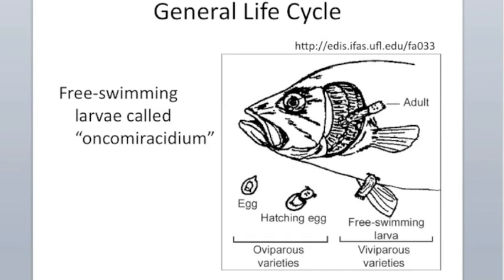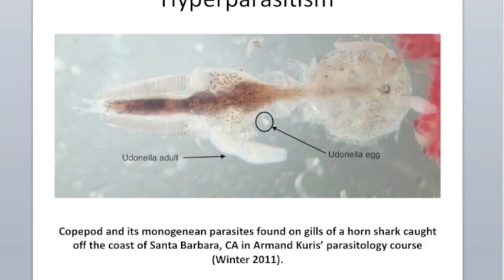A cool example of hyperparasitism involves monogenians. Hyperparasites are parasites of parasites. An Udinella species — a monogenian — infects a copepod, with at least three adults and anchored eggs visible on the copepod host. This copepod was found on a horn shark caught off the coast of Santa Barbara, clinging to the shark's gills. So the copepod is a parasite of the horn shark, and the Udinella monogenians are parasites of the copepod — making them hyperparasites.